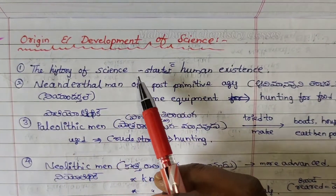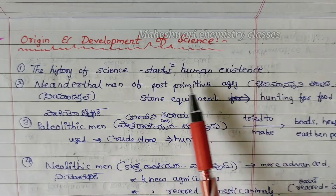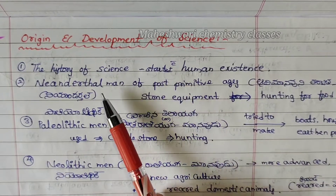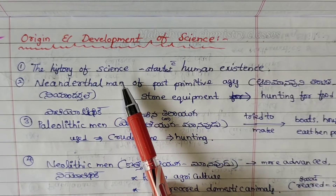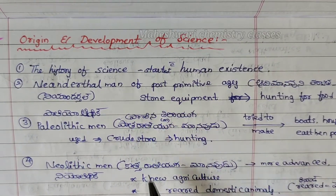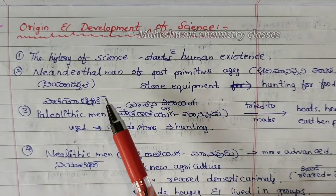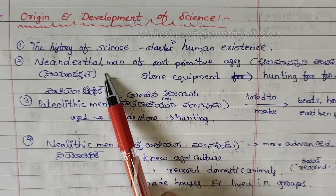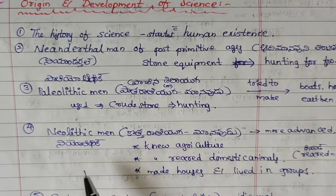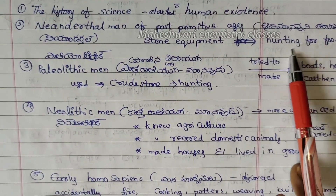The history of science starts with human existence. Here are 4 names of prehistoric men: 1. Neanderthal Man, 2. Paleolithic Man, 3. Neolithic Man, and 4. Early Homo Sapiens.